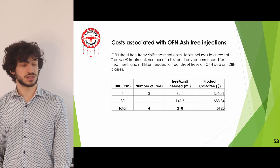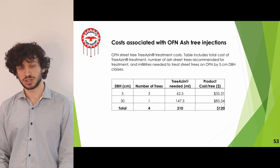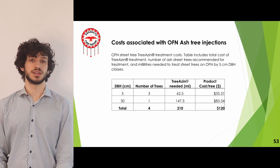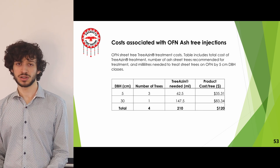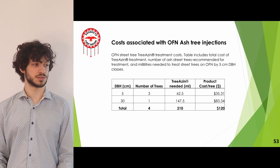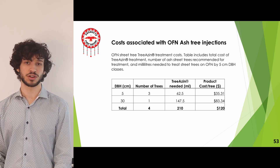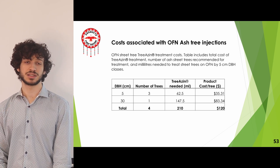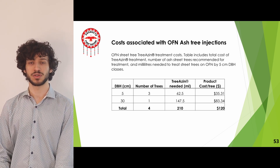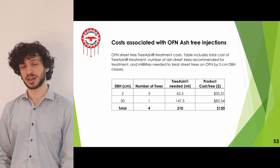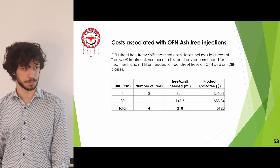The annual cost of treating OFN street tree ash trees with TreeAzin would be about $120 — they are smaller and fewer. However, their current health should be assessed to determine if treatment is viable, as trees with 30% or more crown dieback should not be treated, as it would be too late to save them.